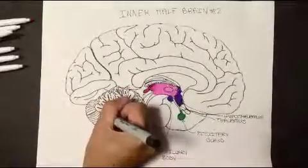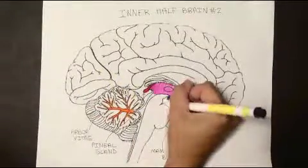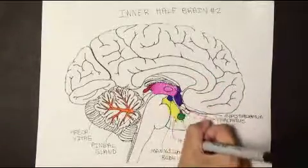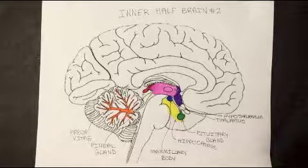In orange, we have the arborvita located in the cerebellum. And finally, the hippocampus is in yellow. Here completes an overview of the general and specific structures of the human brain.